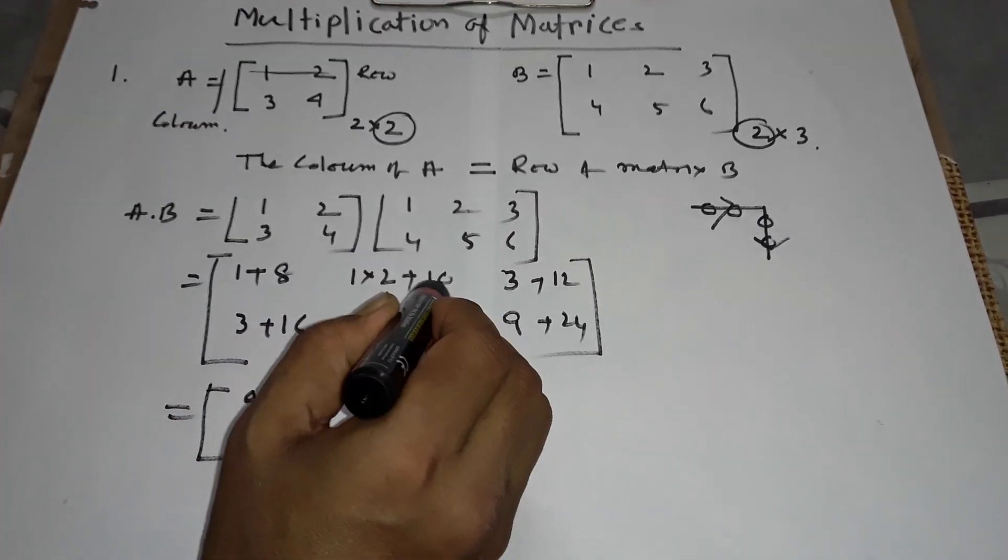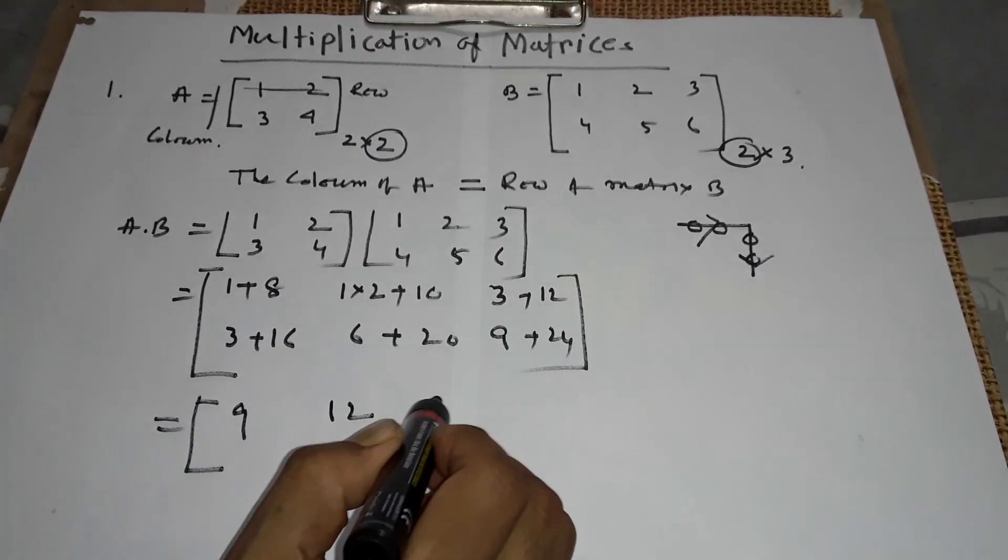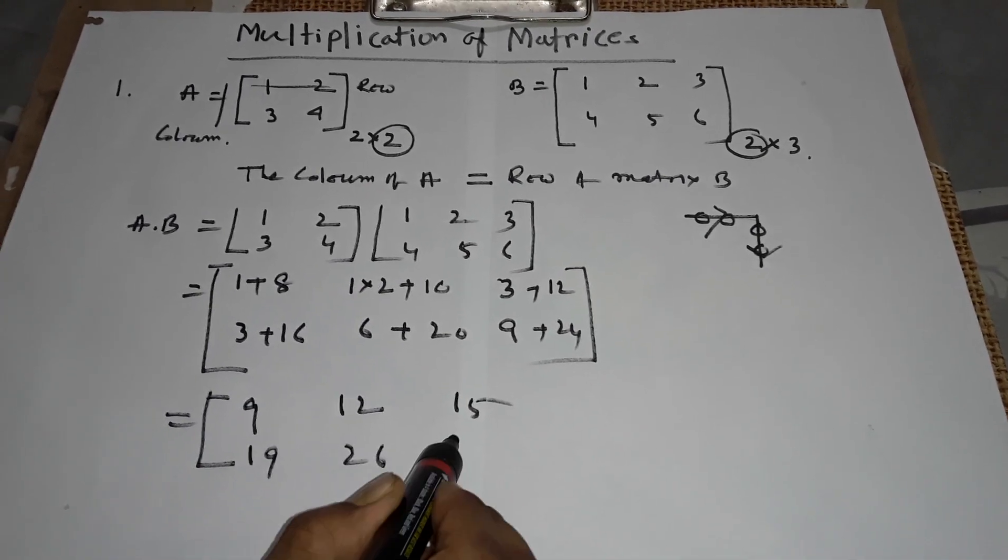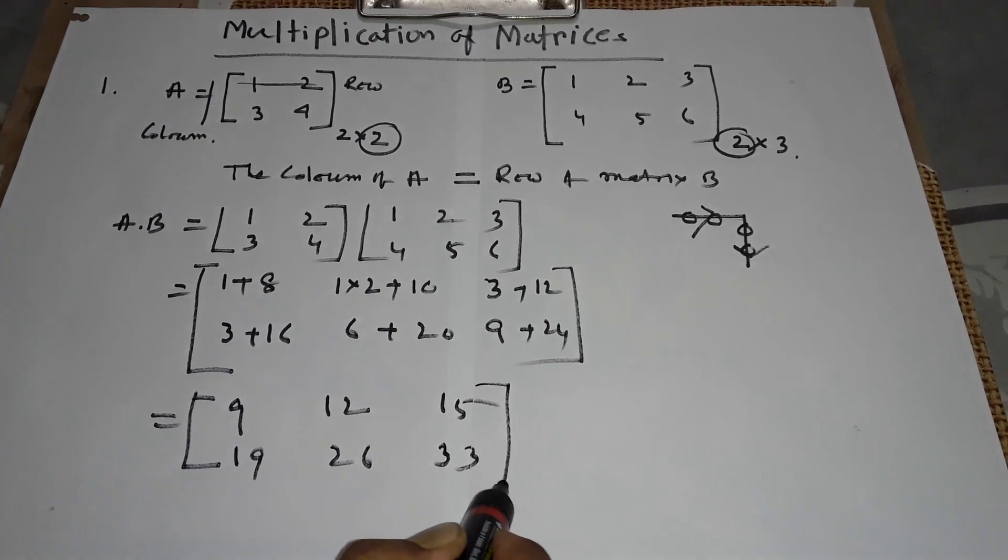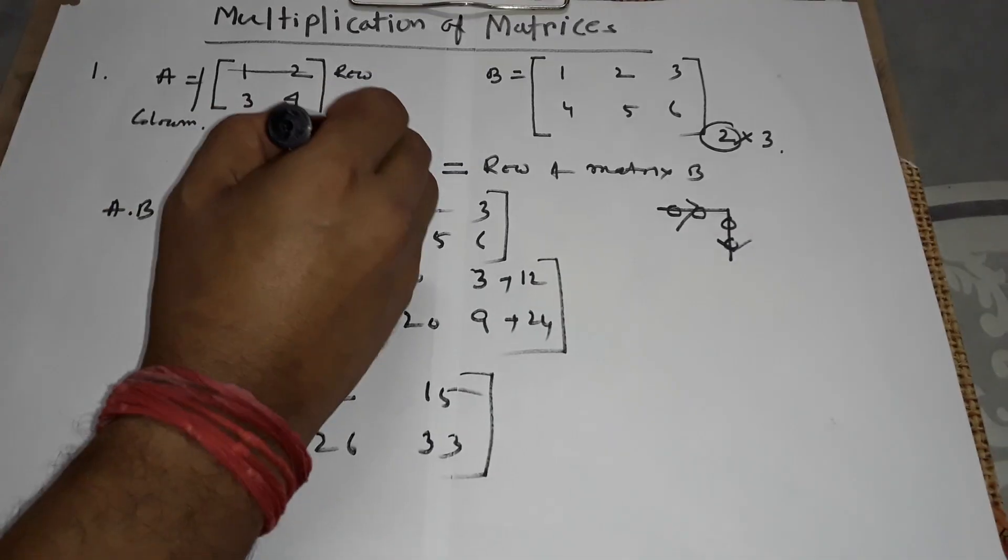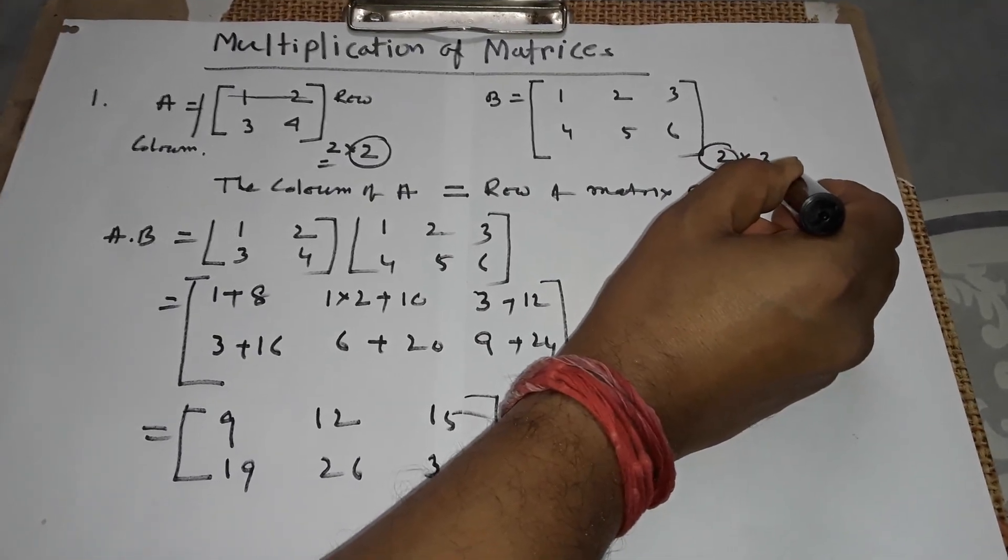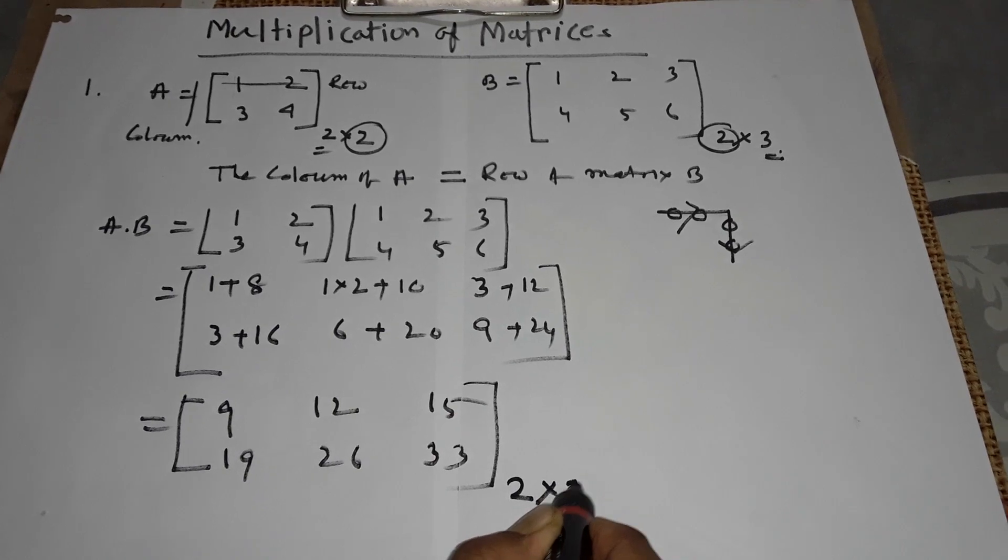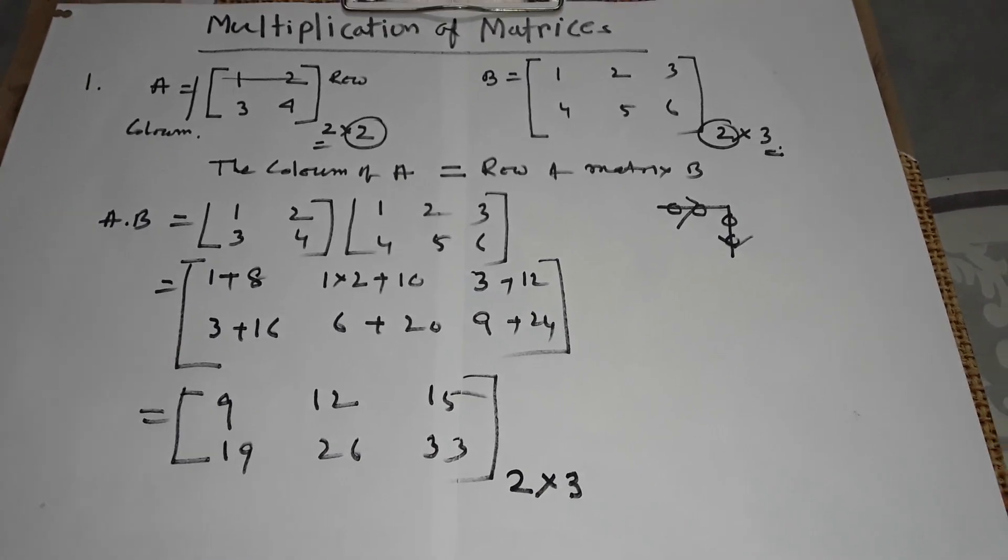9, 12, 15, 19, 26, 33. You see, here is 2 and here is 3. This is the order of A into B.